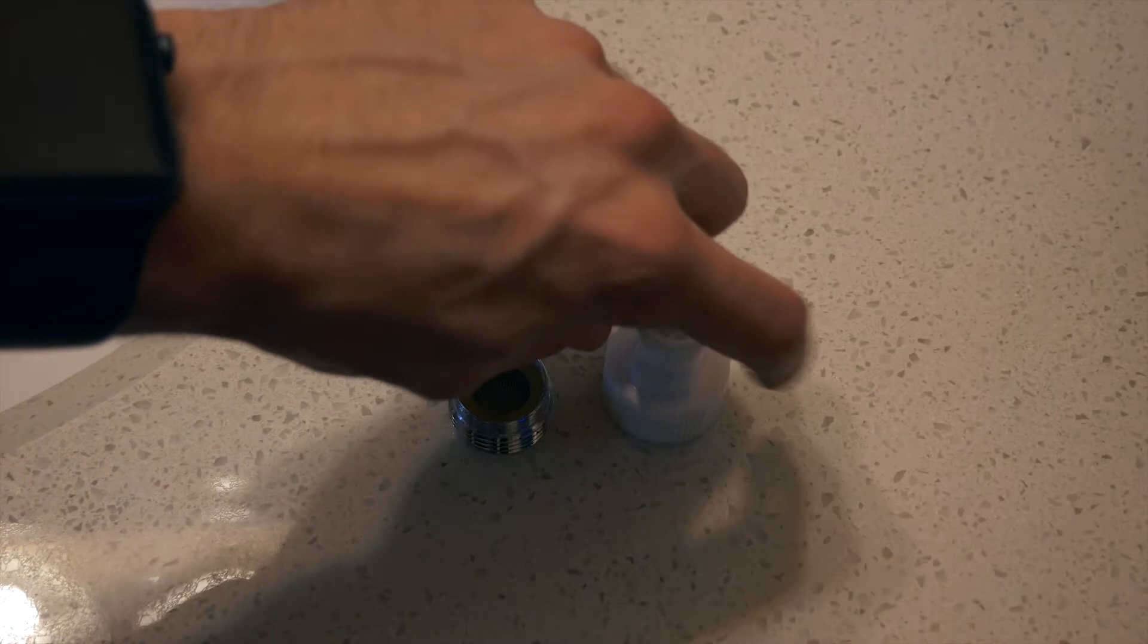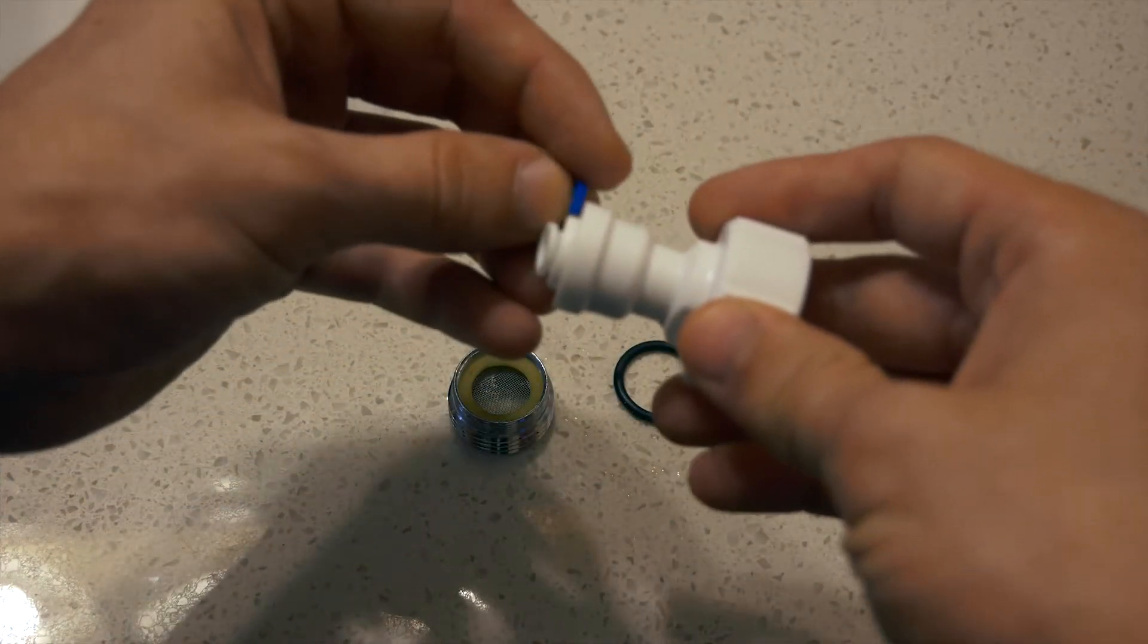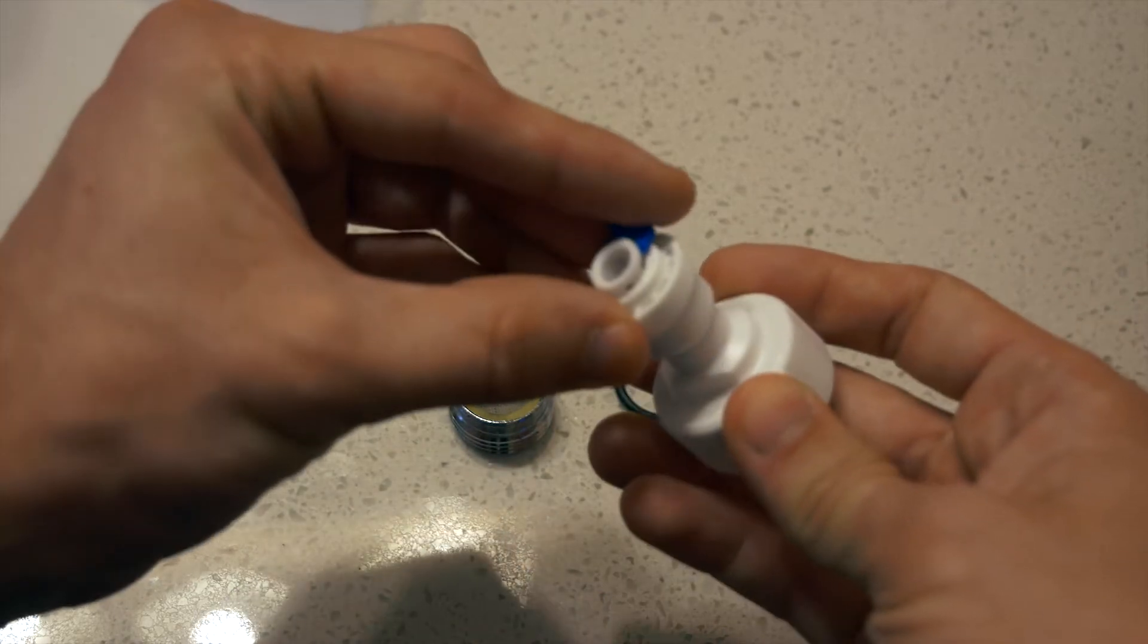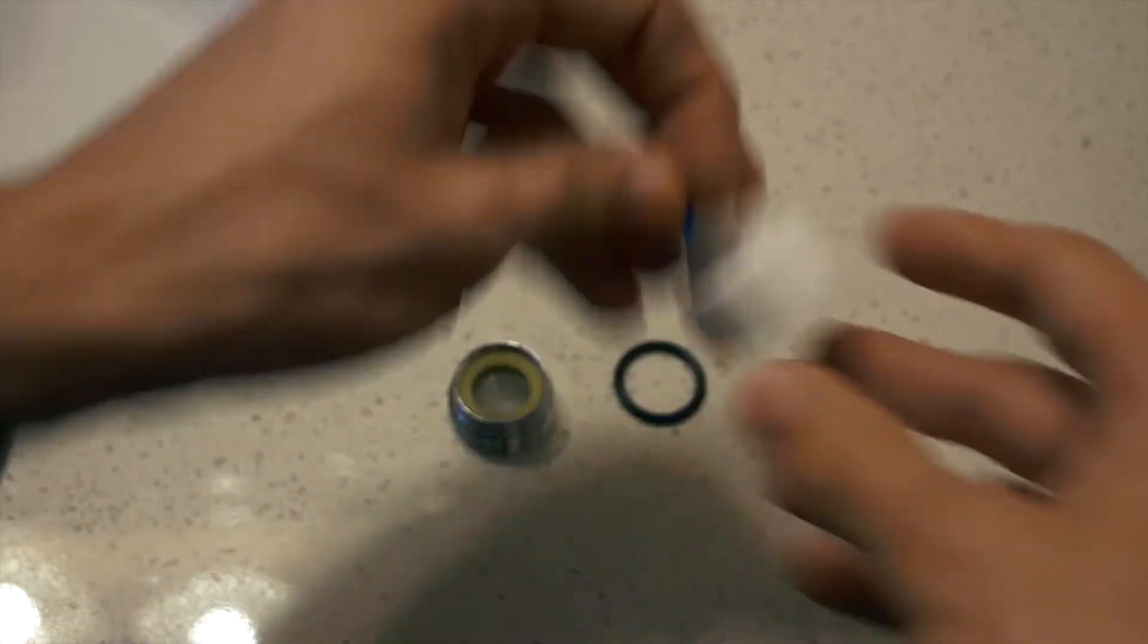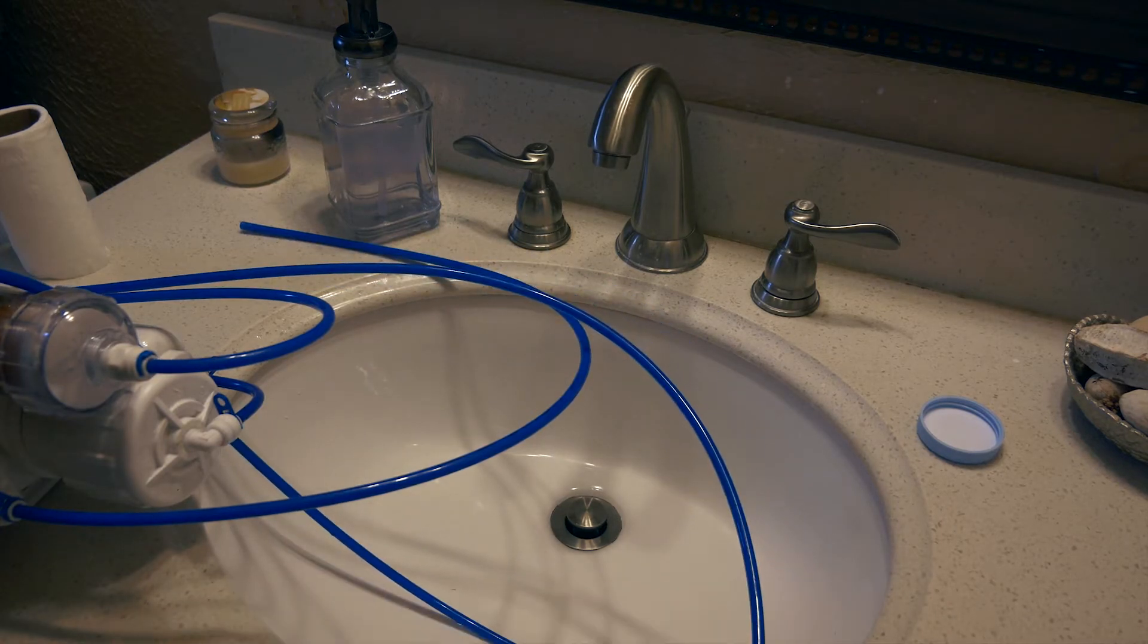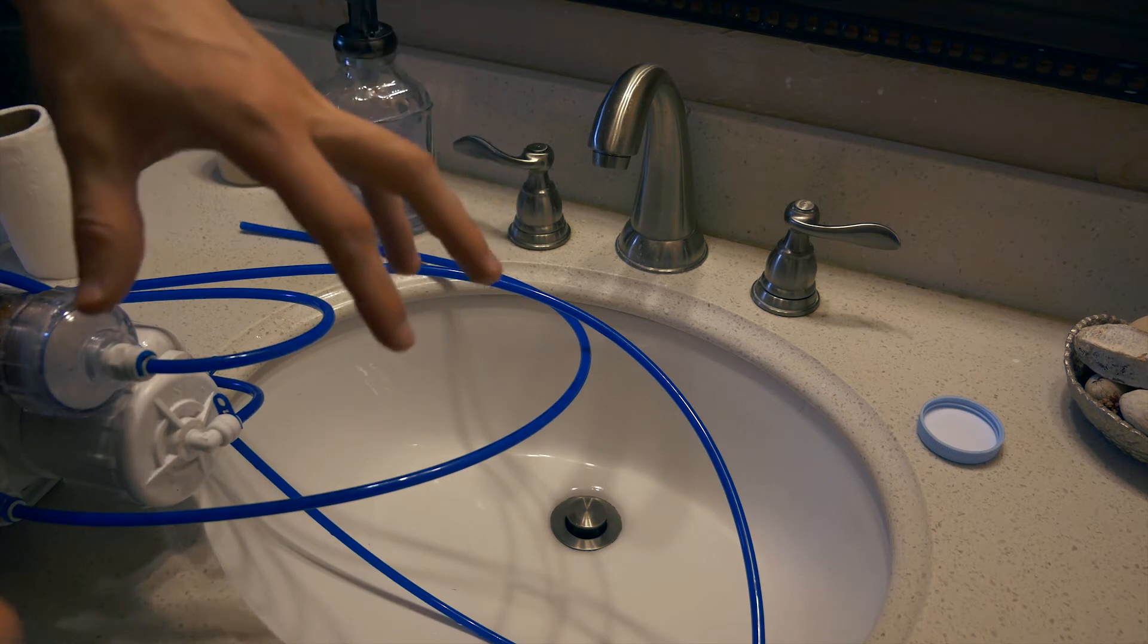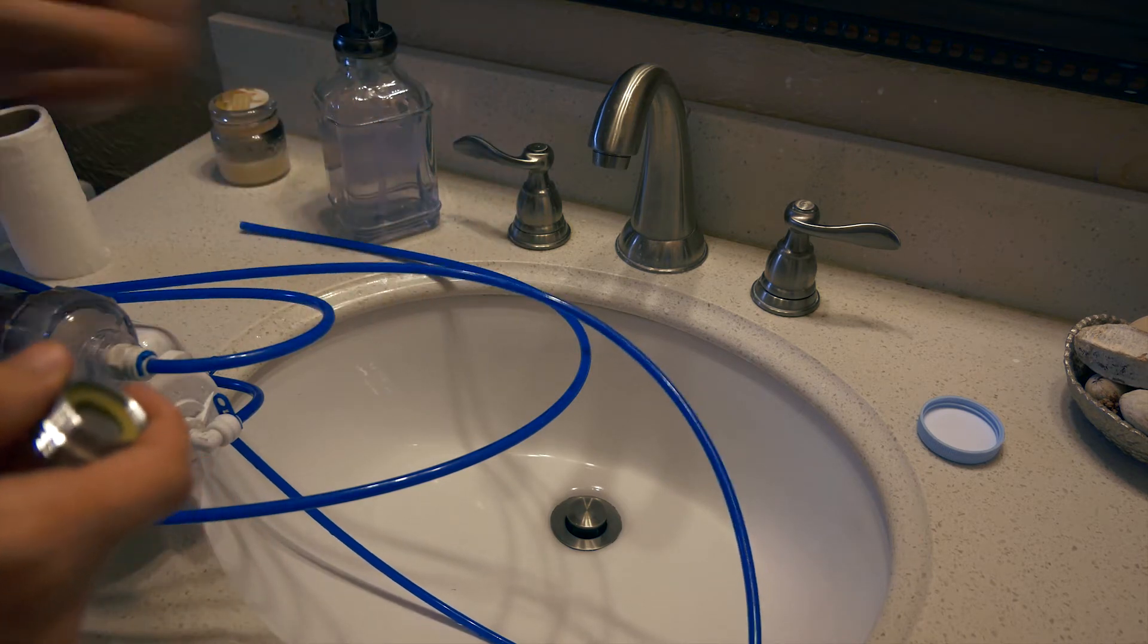Also, the nozzle comes with the RO Buddy. Also it's a crimper for the tubing. And I'll show you here how that works in a minute. So hooking this up is fairly simple. It may look kind of complicated with all these tubes you've got laying around, but I'll show you exactly where they all go in a second. Pretty simple.